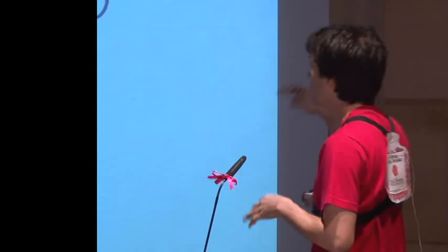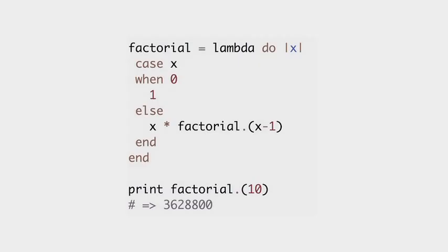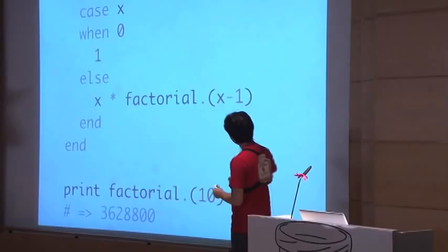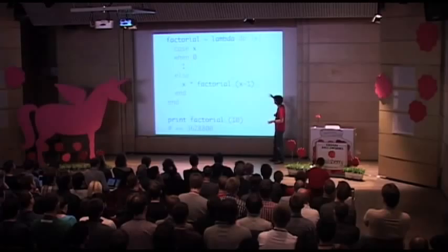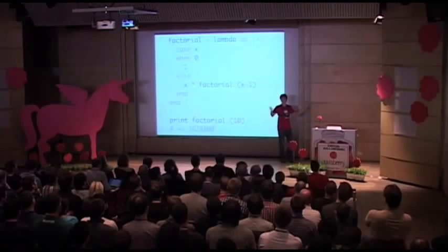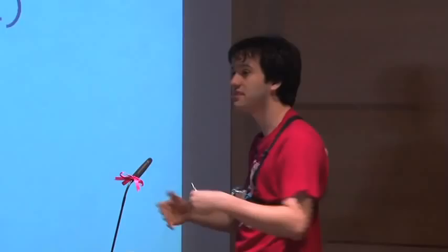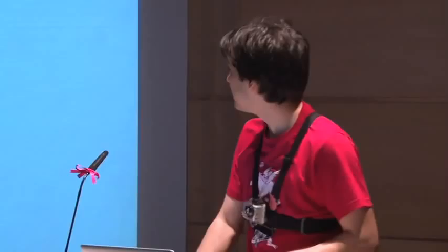In my slides I'll be using pseudo-Ruby code — I'll introduce keywords that don't actually exist in Ruby, but you'll be able to follow. I'm defining a lambda, which I'll be calling a function. I define a function that receives one argument, and based on the argument I can recursively calculate the factorial of a number. In this declarative model I can do mathematics — manipulate lists, classify texts, all this kind of stuff.